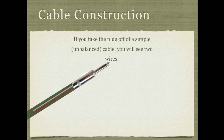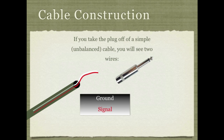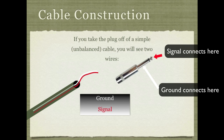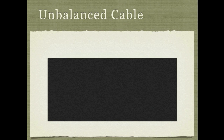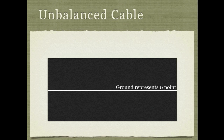In the simplest kind of cable, if you take the plug off you'll see two wires — one serving as the ground or neutral point or earth, and the other serving as the signal wire. This is called an unbalanced cable. The ground represents the zero point, and the hot or signal conductor represents the analog wave. As the analog wave goes up, the electricity increases in a positive direction; as it goes down it decreases in a negative direction, all around that zero point.